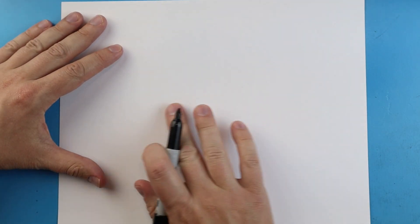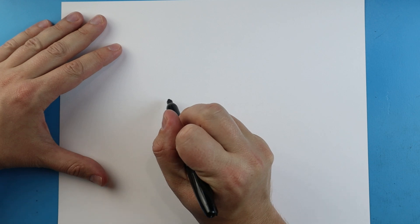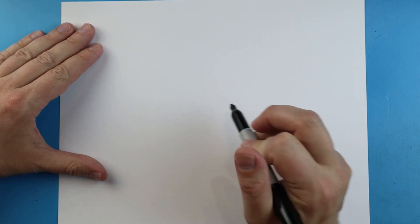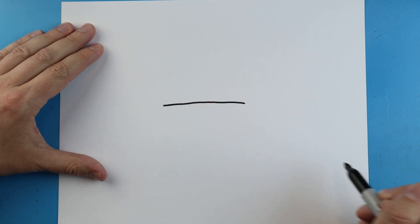Now to start off with our cute candy bar we're going to begin right here and we're going to start with the wrapper. So I just want to make a little line that's going to come straight across here. So begin here and we'll just make a little line that comes across.